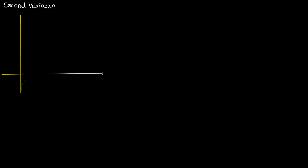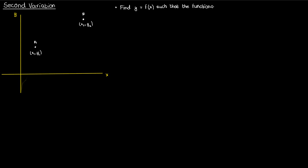To set up the situation that will allow me to determine the second variation, I'm going to use much of what I used back in my Euler-Lagrange derivation video, so if you've seen that, this initial setup should be deja vu. Let's begin by supposing that we have two points a and b given by (x1, y1) and (x2, y2) respectively. What we want to do first is find some function y = f(x) that makes the following functional — or function of functions — stationary.